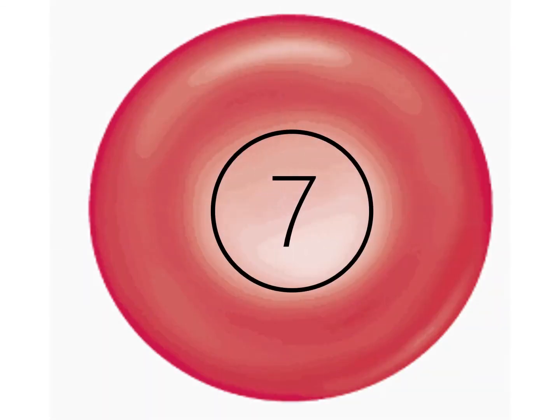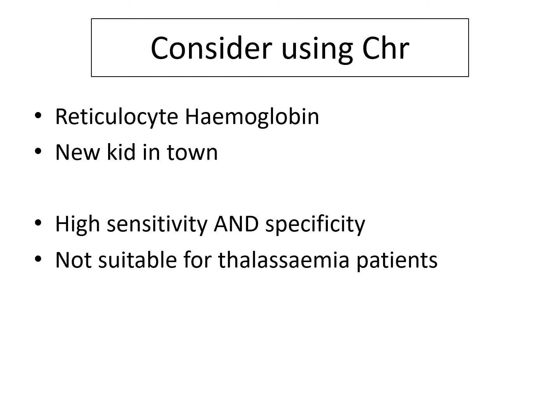Point number seven: consider using reticulocyte haemoglobin, or CHR. This is a fairly new test, and it's very popular because it's sensitive and specific — except in thalassemia patients. So if you've got readings that don't quite match up, your patient has the right background, or they're very microcytic compared to their haemoglobin level, it's worth considering if they have a thalassemia gene. Otherwise, for most people, CHR is a great test.